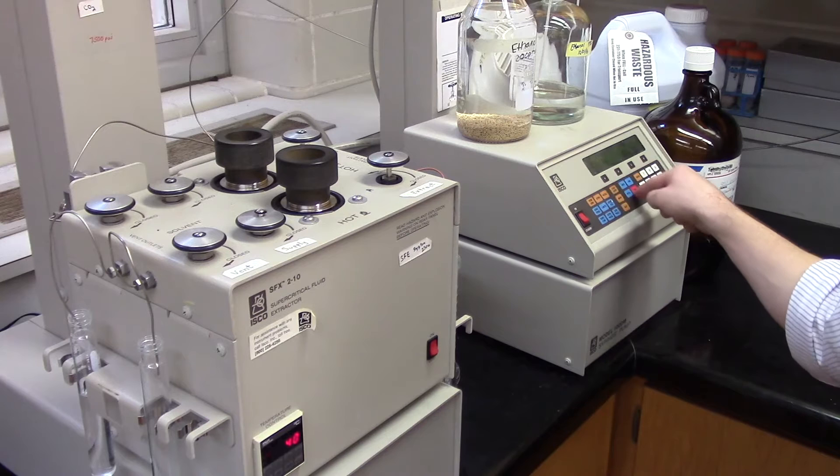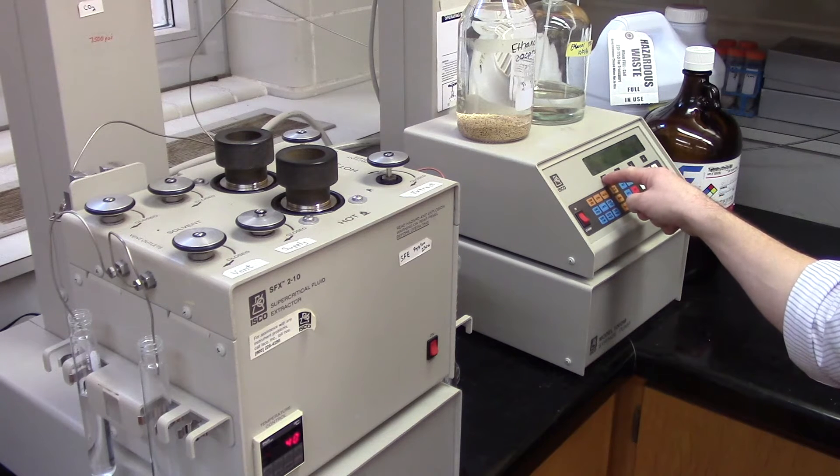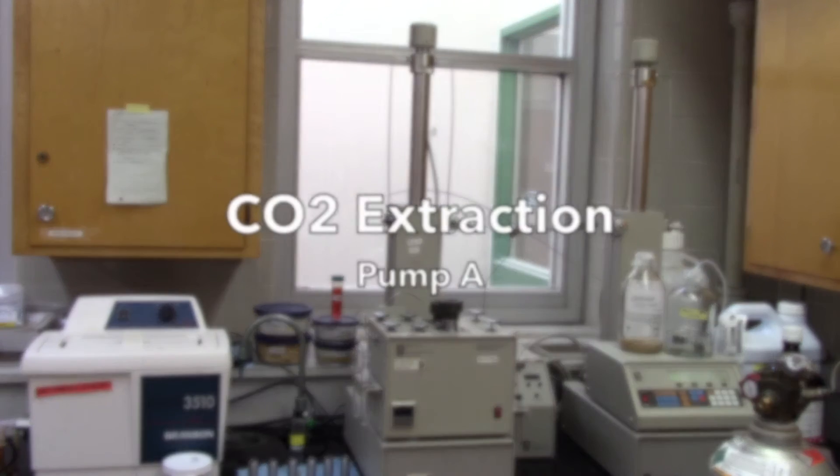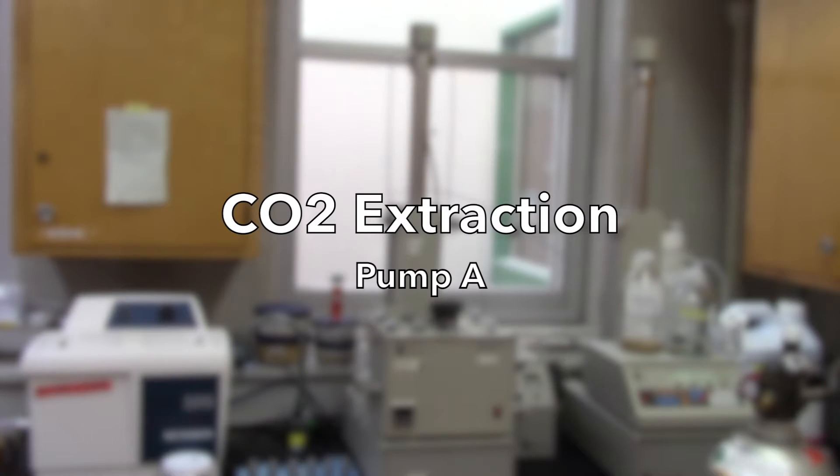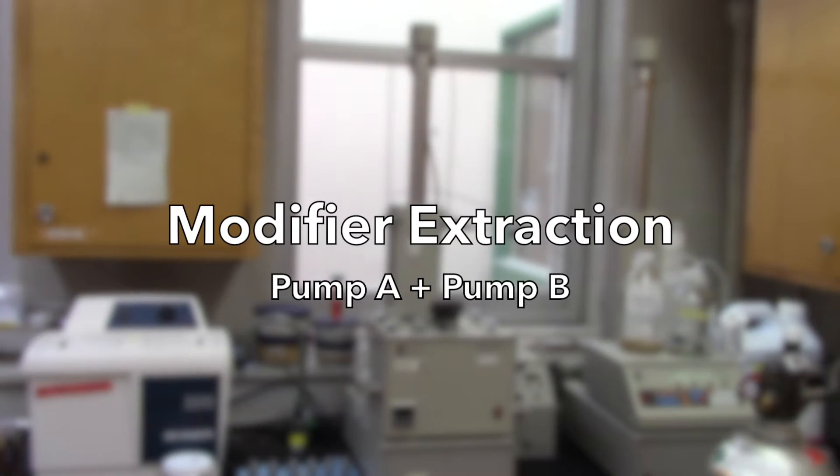The last piece is the control panel. This is where you monitor the extraction and control pressure and other various parameters. Now, I'll show you how to do extractions. There are two types of extractions. The first is a basic CO2 extraction that only requires pump A, and the other is a modifier extraction that uses both pumps.